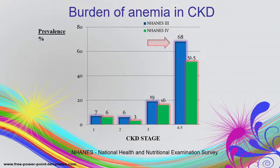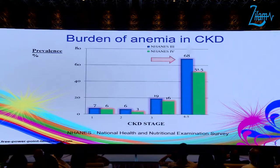This diagram clearly shows that in two surveys from the National Health and Nutrition Examination Survey (NHANES 3 and 4), whenever CKD stage progresses, the prevalence of anemia increases. The causes of anemia in CKD are multifactorial.